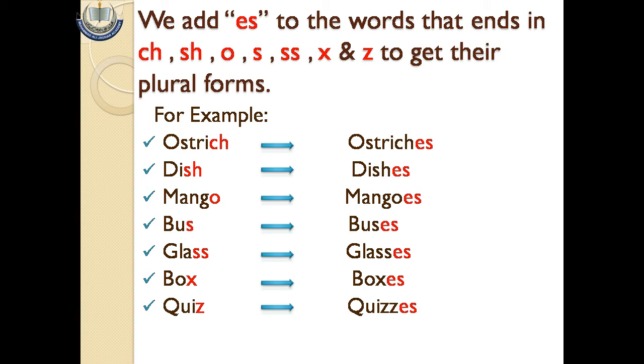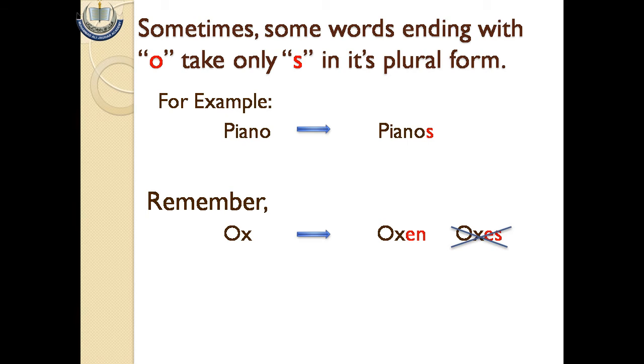Sometimes some words ending with 'o' take only 's' in its plural form. Wo words jo 'o' pe end ho rahe hote hain, un mein just 's' laga ke plural form banayi jati hai. For example: piano becomes pianos.